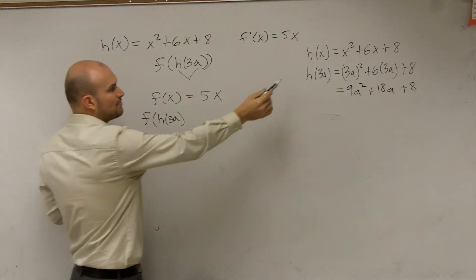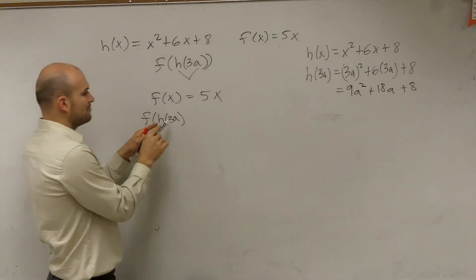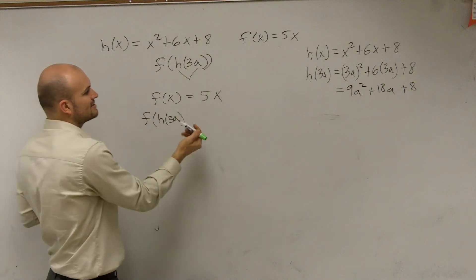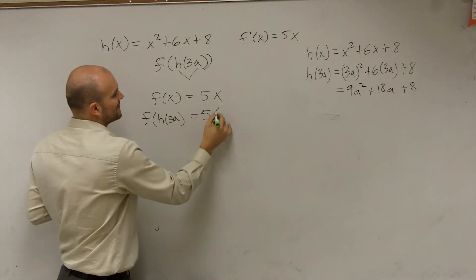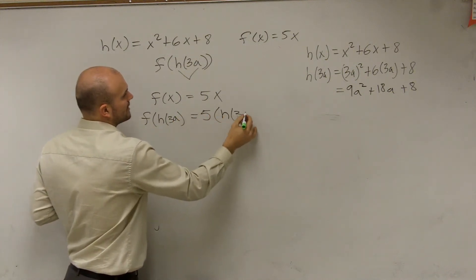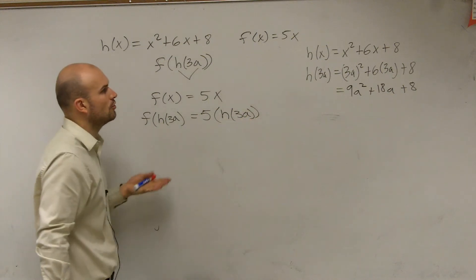So just like we plugged in the 3a for x, we're now going to plug in h of 3a in for this x. So it's going to be 5 times h of 3a. Because that's just the whole process that we do.